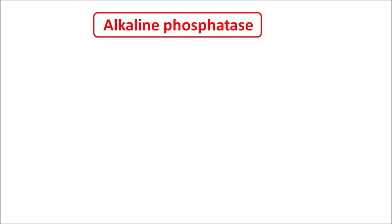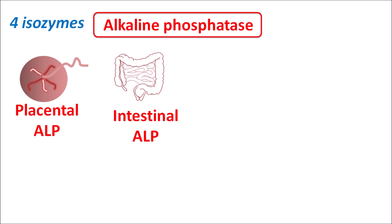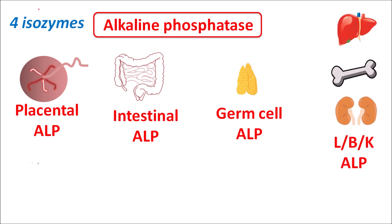Based on that, alkaline phosphatase can be classified into four isozymes. One isoform is present at the placenta, called placental alkaline phosphatase. The second isoform is present in the intestine — intestinal alkaline phosphatase. The third one is present in germ cells such as thymus and testis, called germ cell alkaline phosphatase. The fourth is widely distributed in liver, bones, and kidney, labeled as LBK alkaline phosphatase. The serum alkaline phosphatase levels are mainly contributed from bones, and the liver also contributes to serum ALP levels.